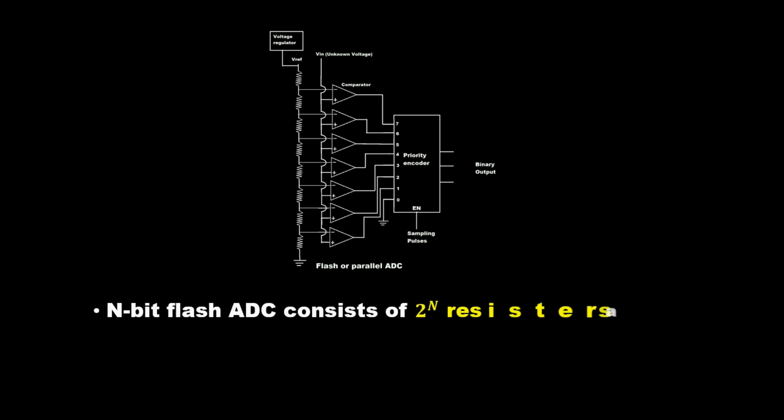N-bit Flash ADC consists of 2^N resistors and 2^N - 1 comparators.